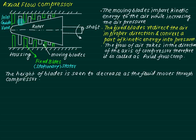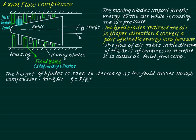As we move inward, the kinetic energy is converted into pressure energy, thereby increasing the density of air. To keep the mass flow rate constant — given by density multiplied by area multiplied by velocity, where density equals p divided by RT — as density continuously increases, we must keep the area lower and lower. That is why the blade height decreases toward the outlet.